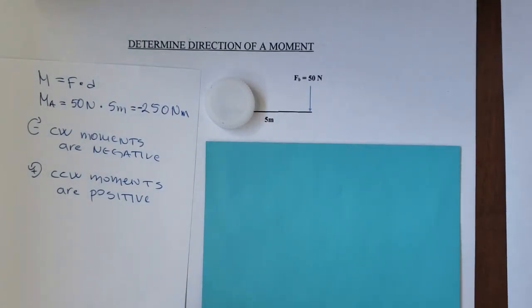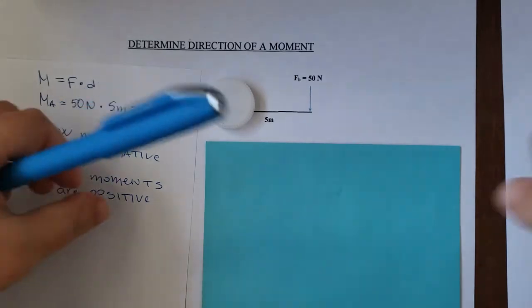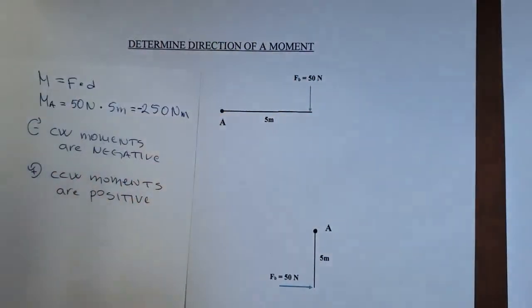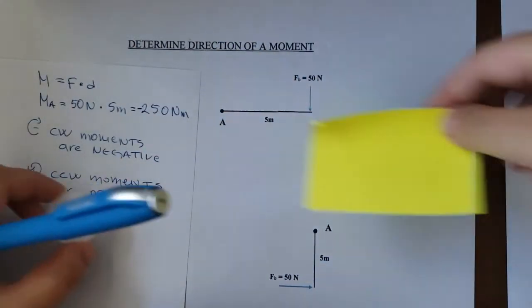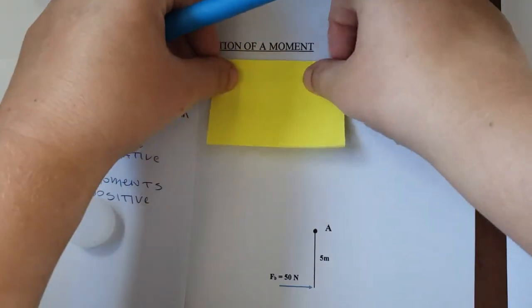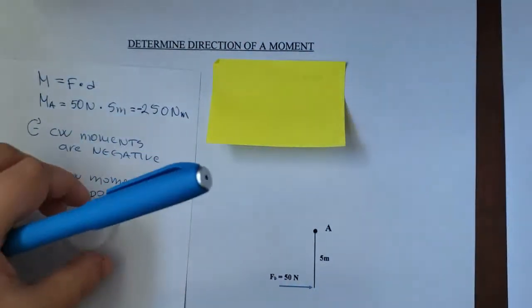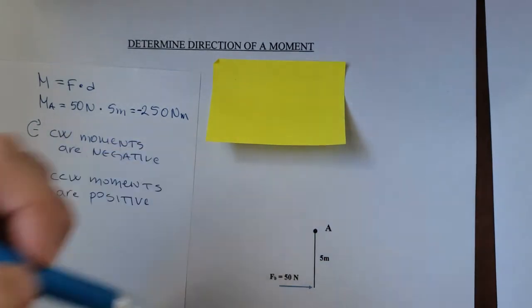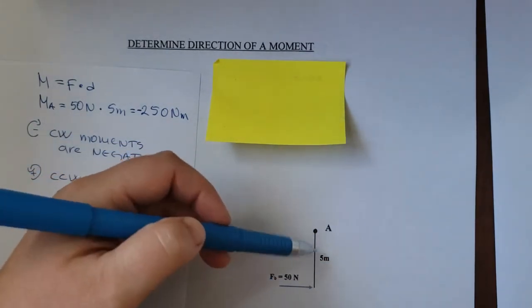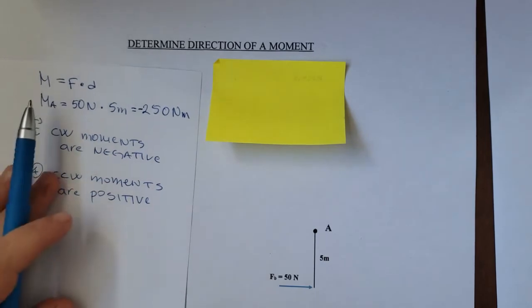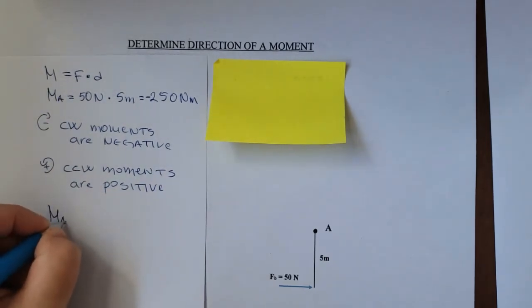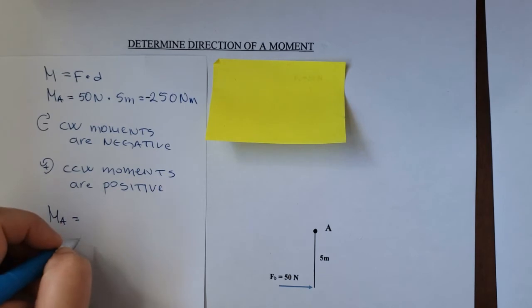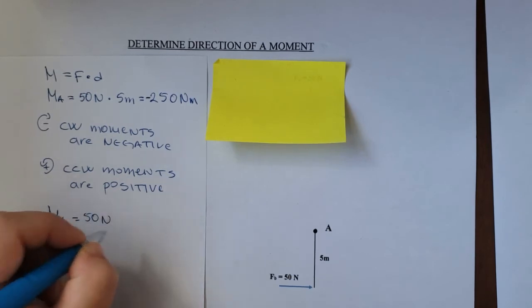Let's do another example. So what we have here is a moment at point A with a force of 50 newtons acting on a distance of 5 meters from point A.